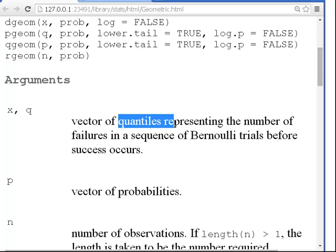So, number, vector of quantiles, or vector of quantiles, represented the number of failures in a sequence of Bernoulli trials before the success occurs.